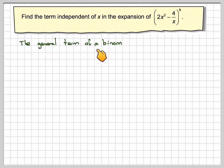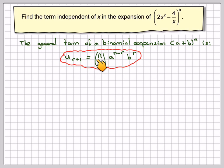So the general term of a binomial expansion, a plus b to the n, is u to the r plus 1, ncr, a to the n minus r, b to the r.